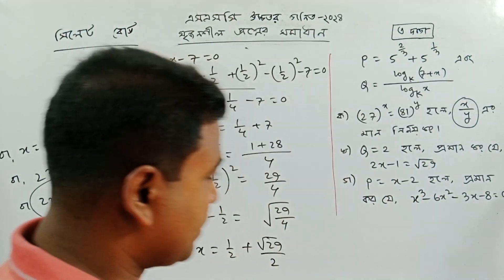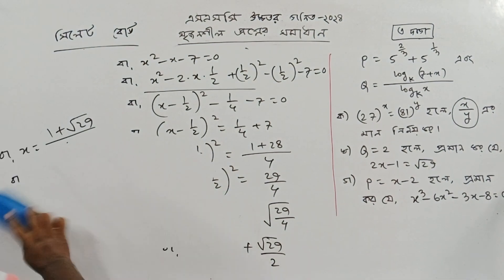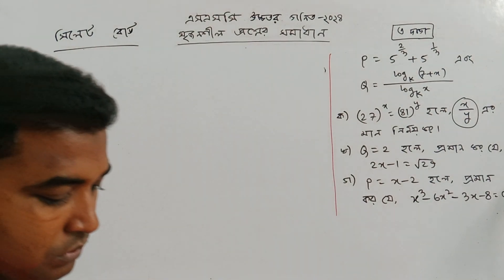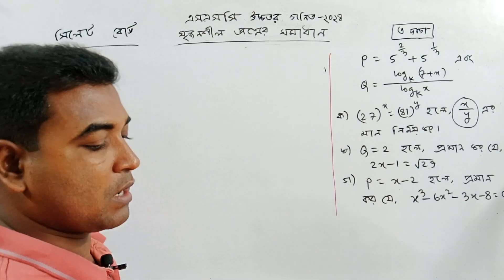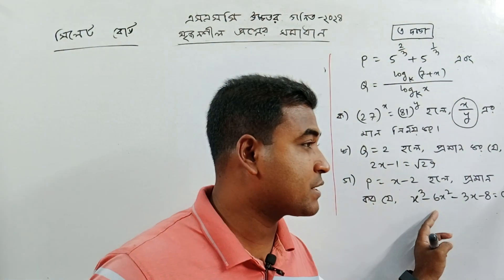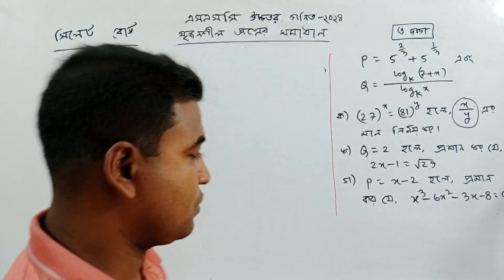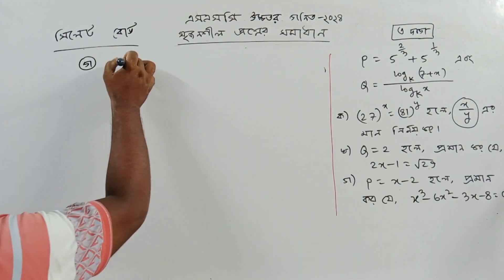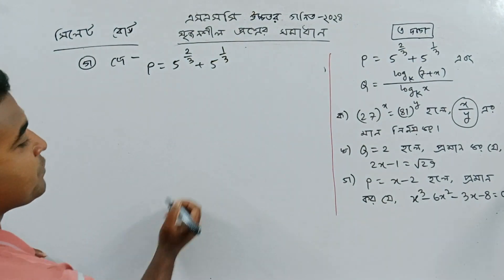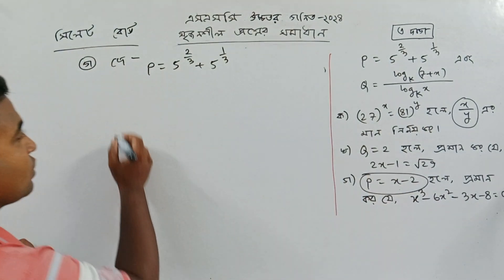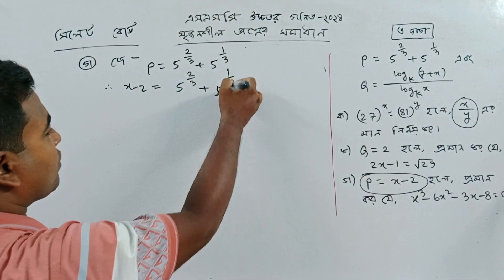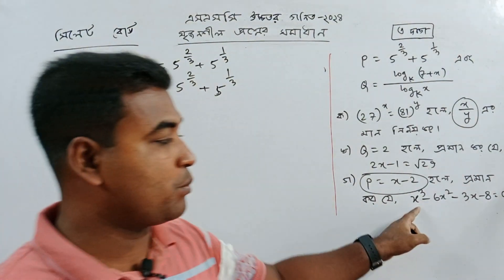Now for Problem 3: p equals x minus 2, and the equation is x cube minus 6x square minus 3x minus 8 equals 0. Also p equals 5 to the power 2/3 plus 5 to the power 1/3. Since p equals x minus 2, we substitute: x minus 2 equals 5 to the power 2/3 plus 5 to the power 1/3. Now we deal with x cubed.